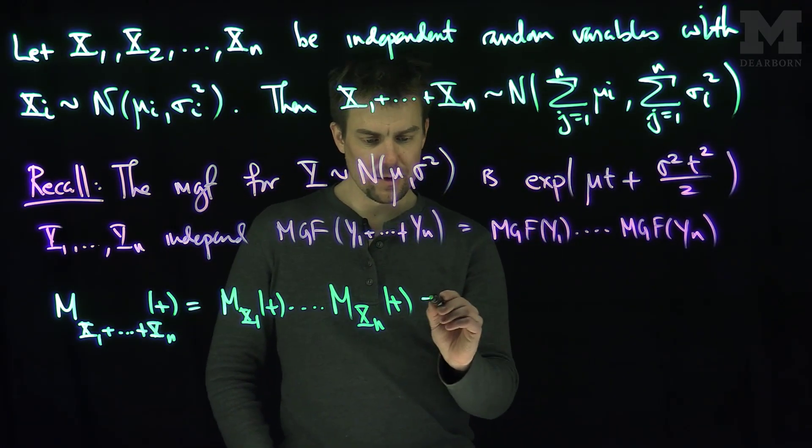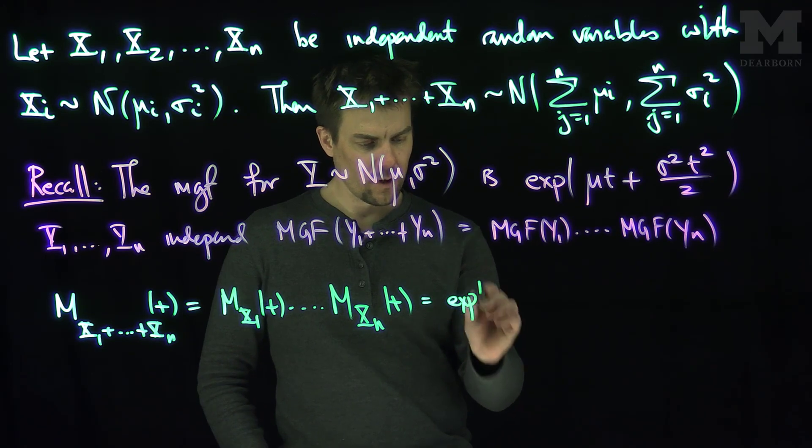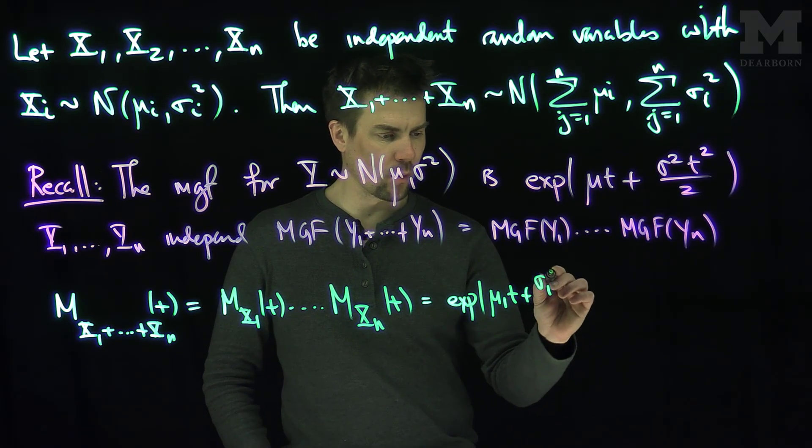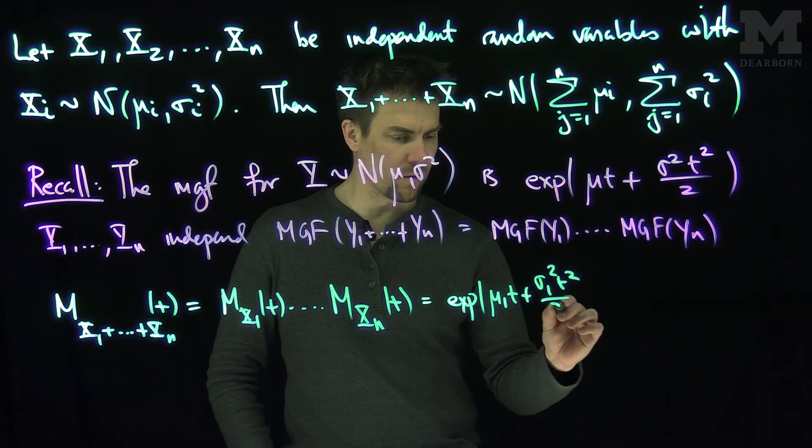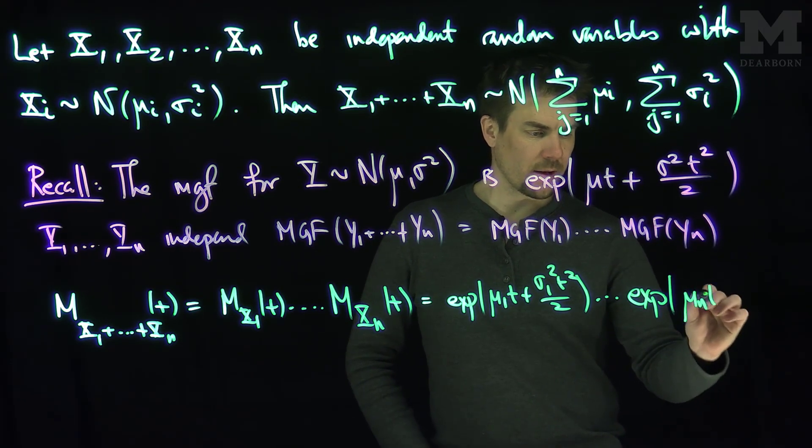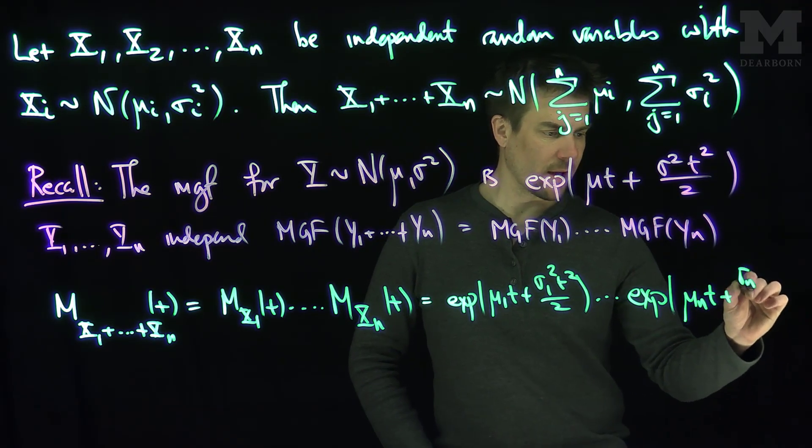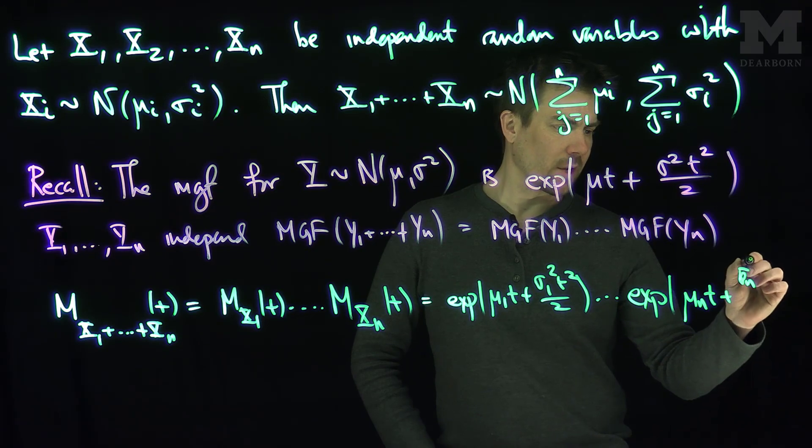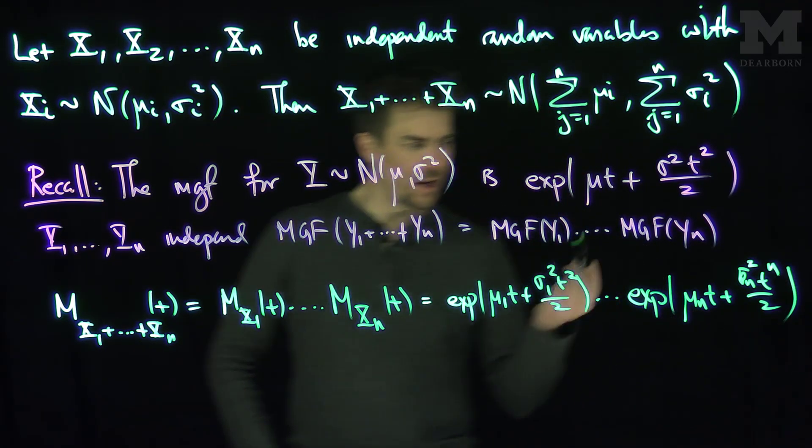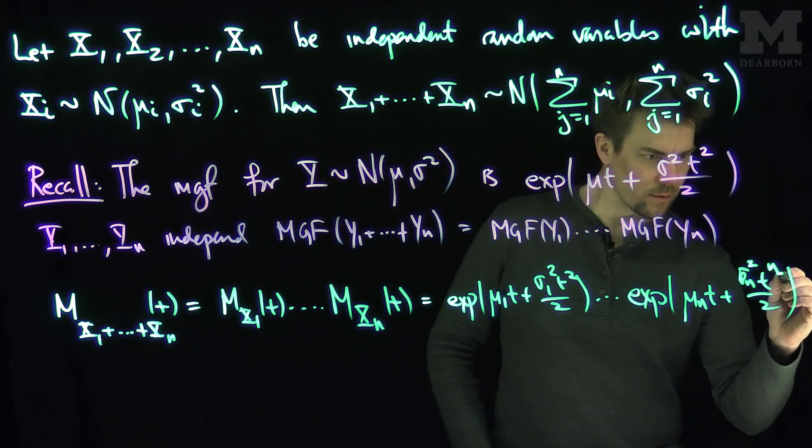And now we can write out exactly what this thing is. This first thing over here is the exponential of μ₁t plus σ₁ squared t squared over 2, times all the way down to the exponential of μₙt plus σₙ squared t squared over 2.